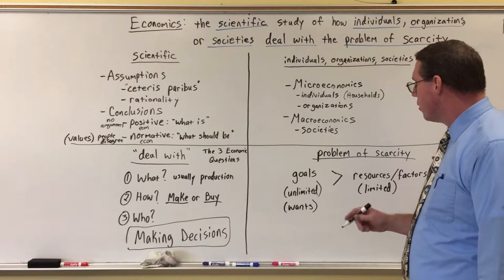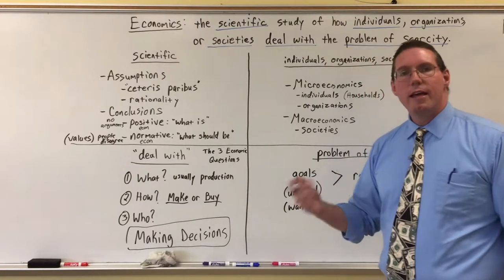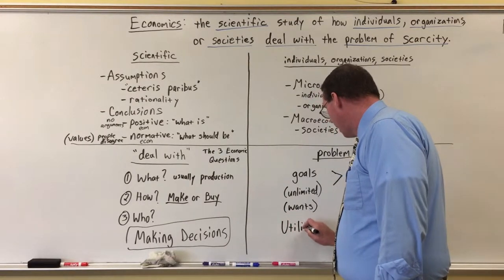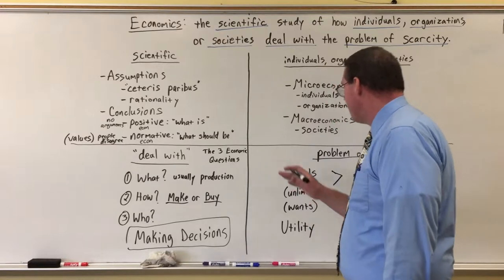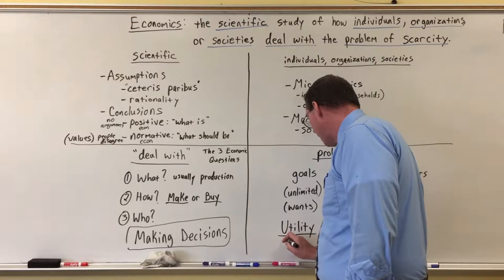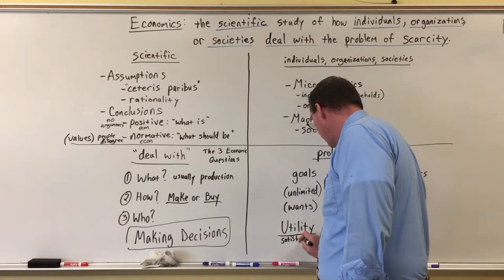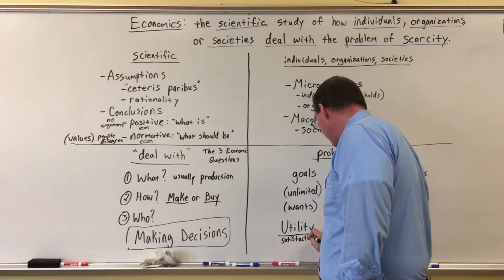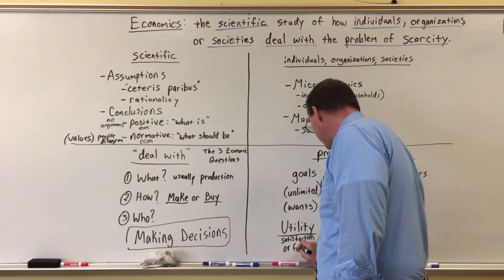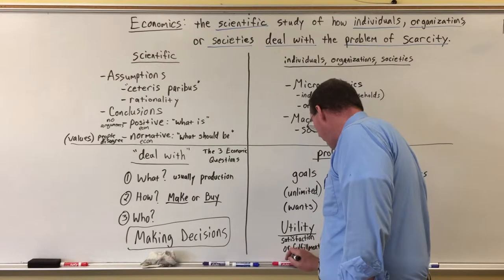Generally, the main thing that we want in economics — and it is unlimited — we call utility. Utility is the satisfaction, or fulfillment, of desire.